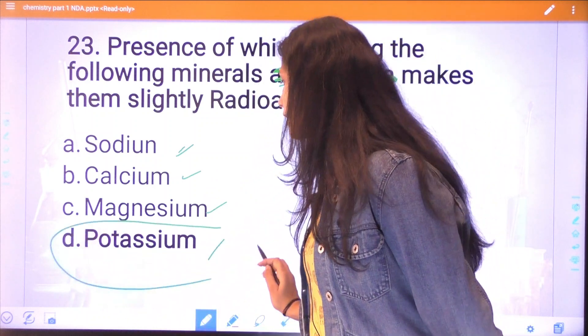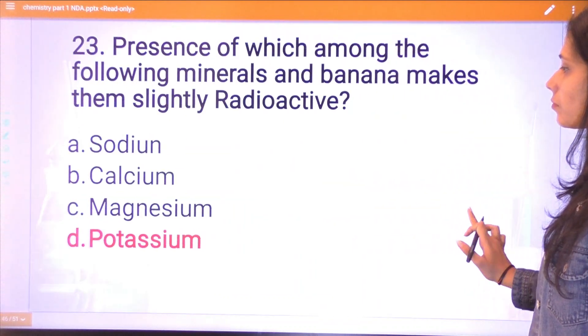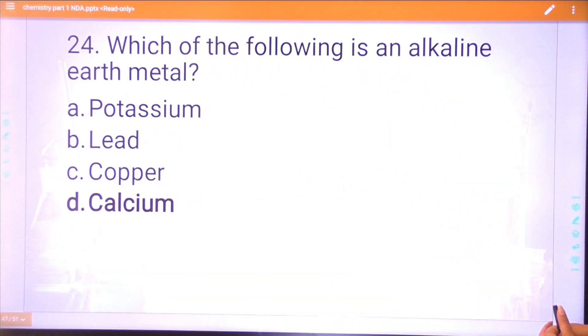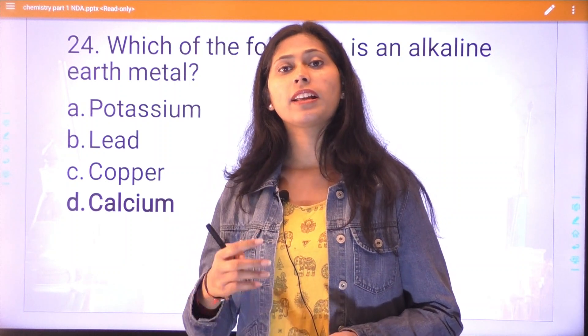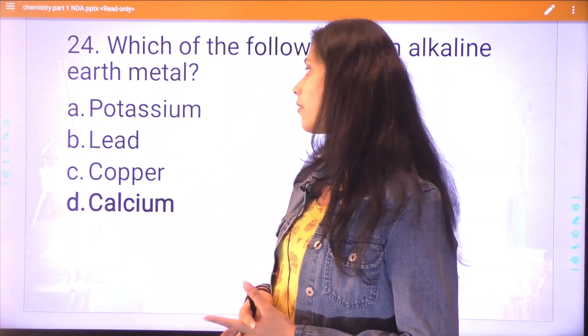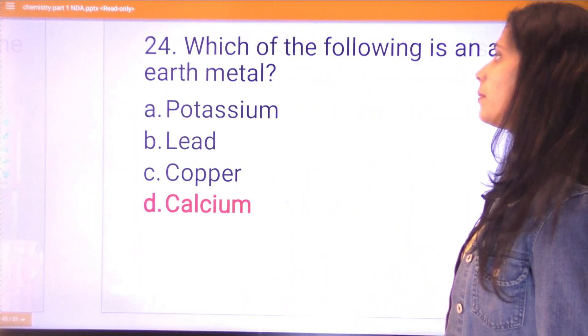Question twenty-four: which of the following is an alkaline earth metal? You should have proper knowledge of metals - which is metal, which is non-metal, which is noble gas, which is radioactive. Calcium is an alkaline earth metal.